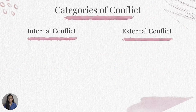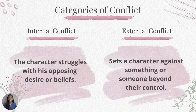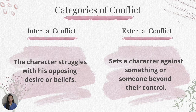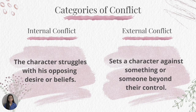We have two categories of conflict. The first one is internal conflict; the second one is external conflict. For internal conflict, the character struggles with opposing desires or beliefs. From the word itself — internal — the struggle is happening inside the mind of the character. It is a psychological struggle caused by their own emotions, fears, conflicting desires, conflicting beliefs, or even mental illness.